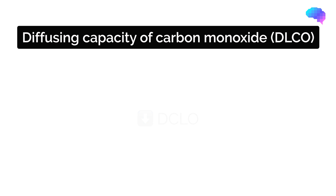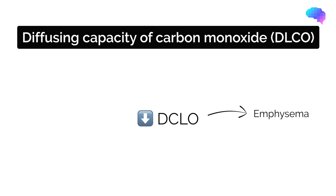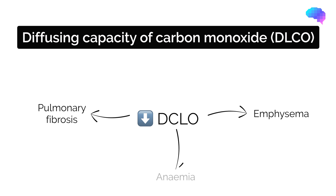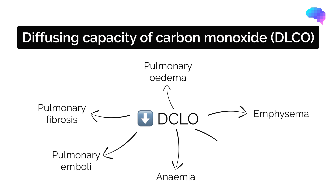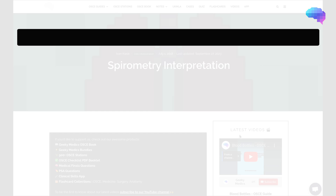Causes of a decreased diffusion capacity of carbon monoxide include emphysema, pulmonary fibrosis, anemia, pulmonary edema, pulmonary emboli, and a decreased cardiac output.